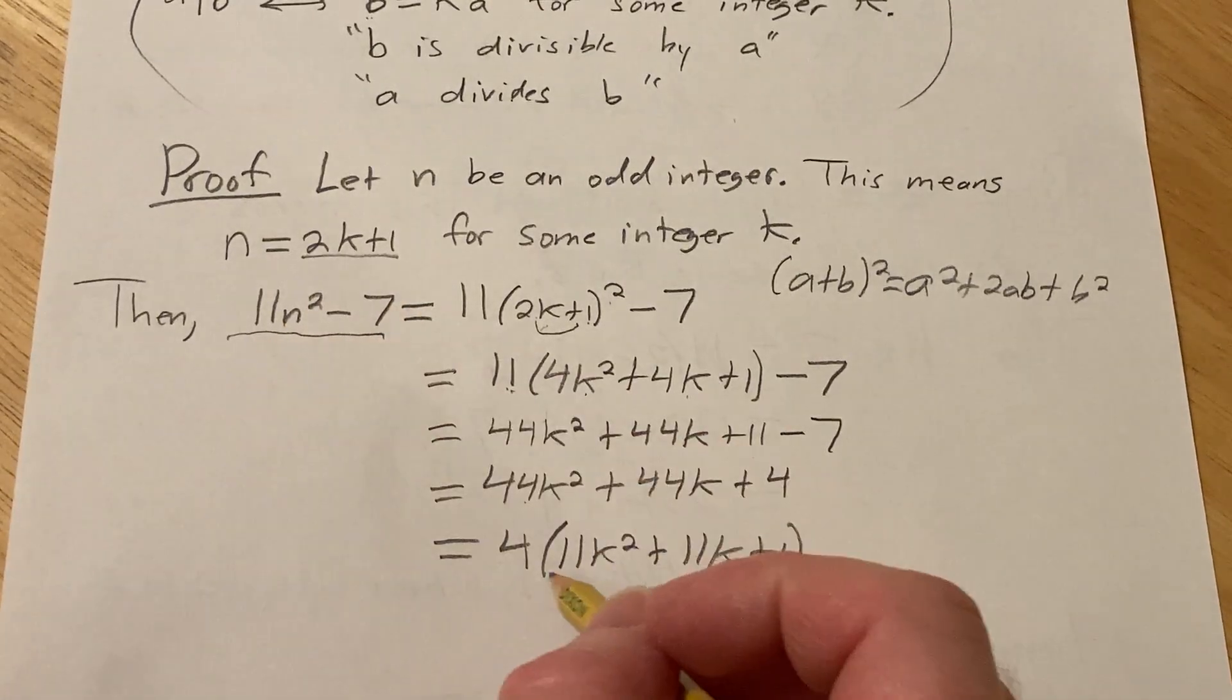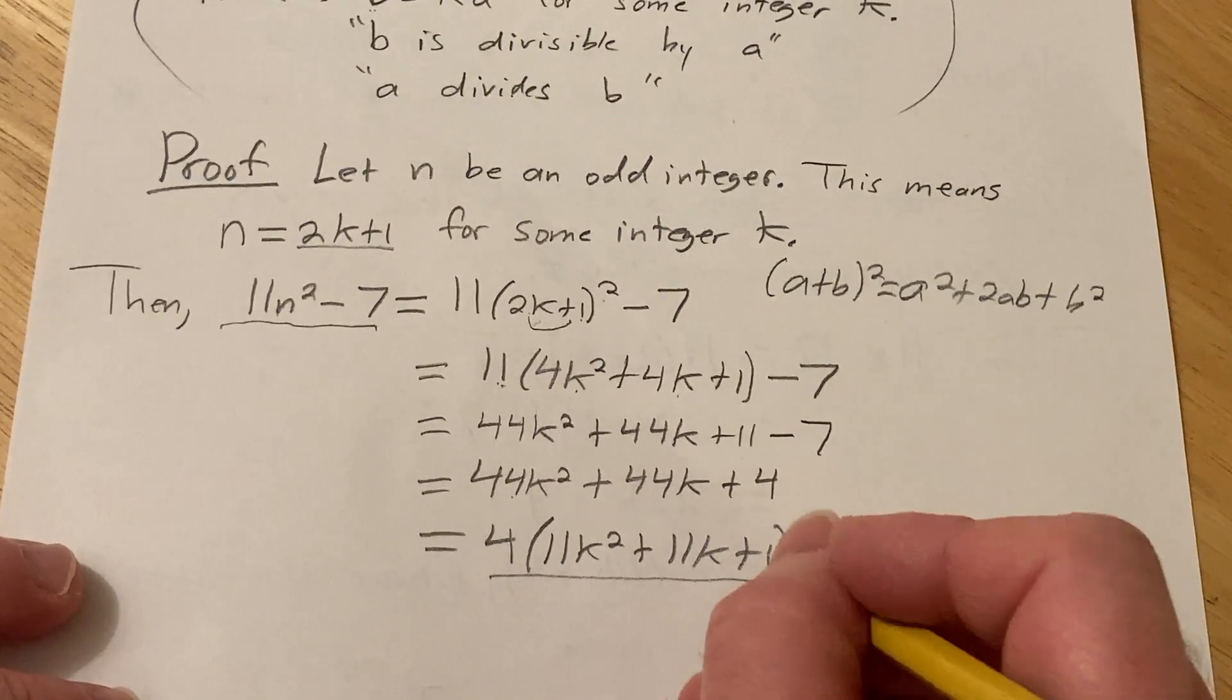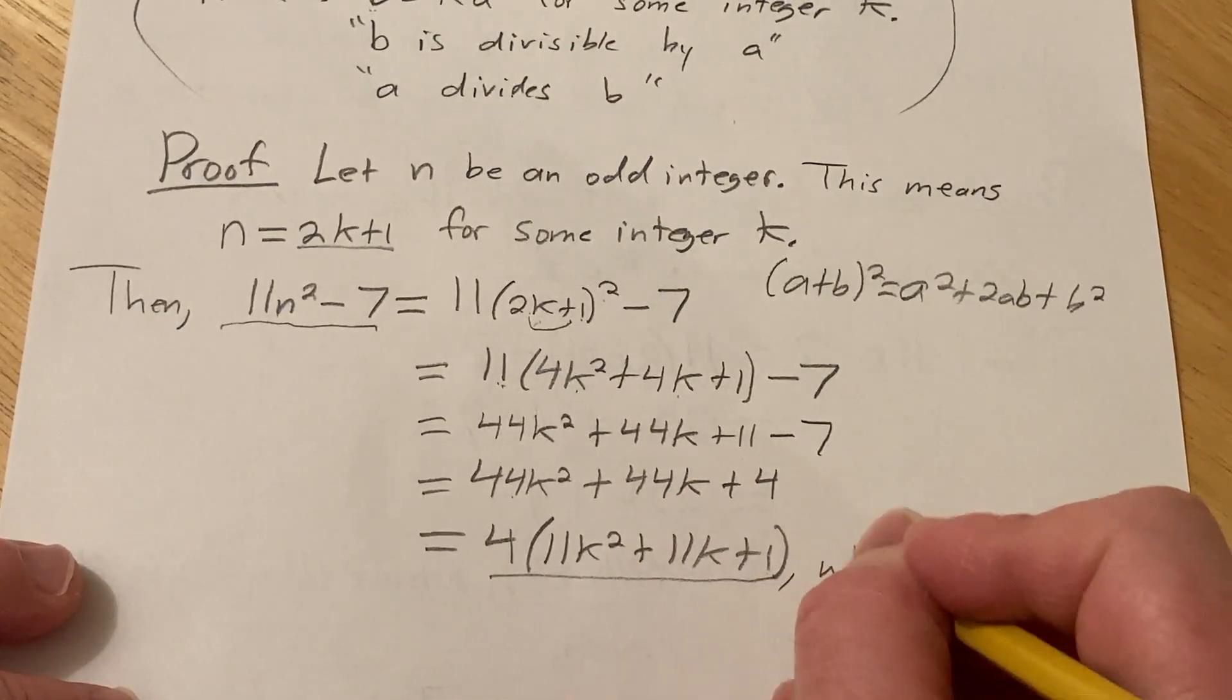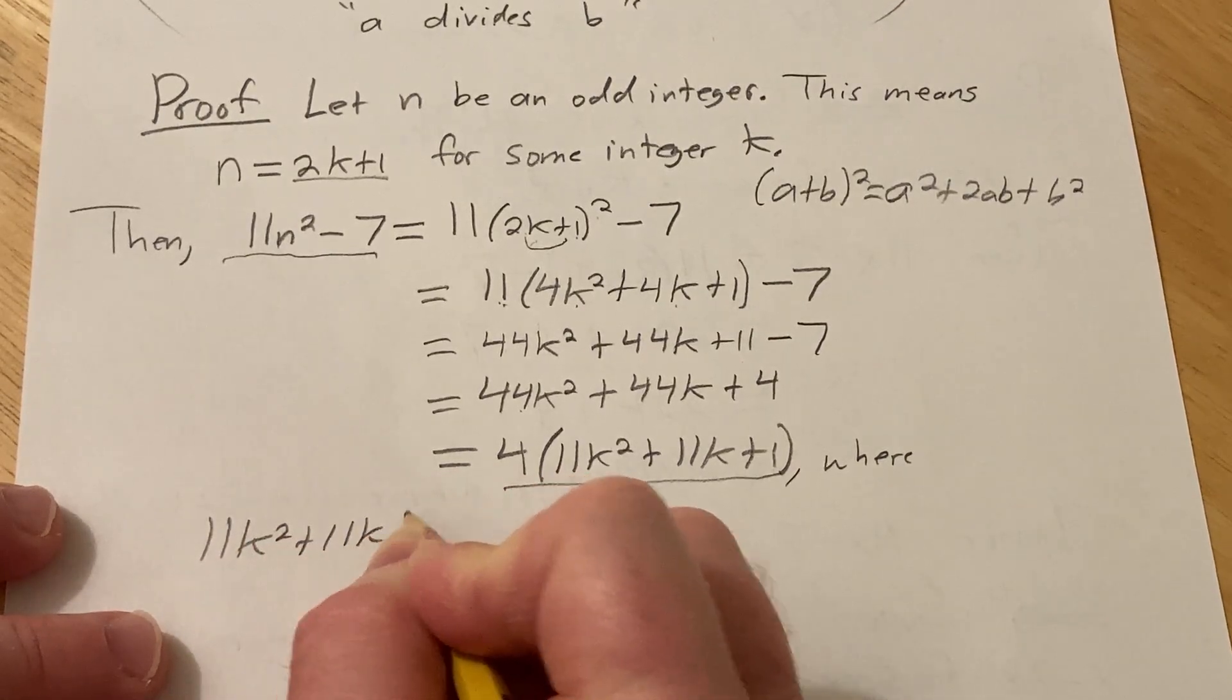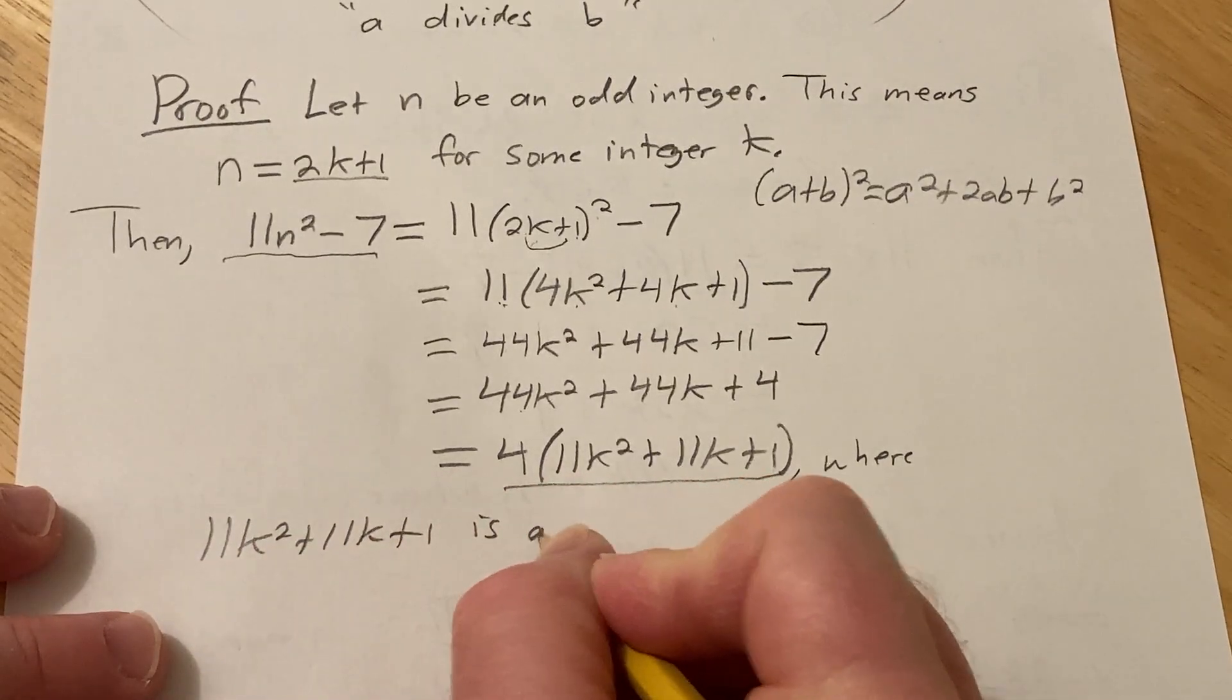So we have 11n² - 7 is a multiple of 4. You probably need to say that this is an integer. So let me just specify where 11k² + 11k + 1 is an integer.